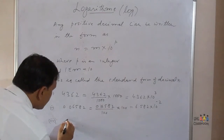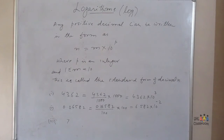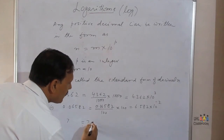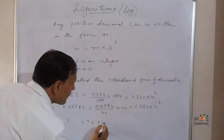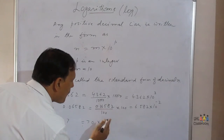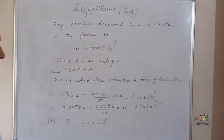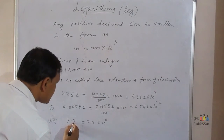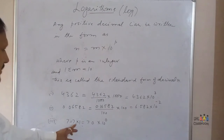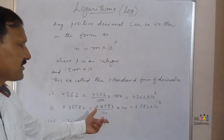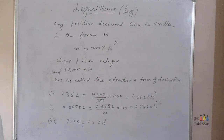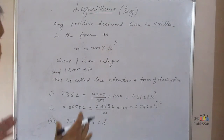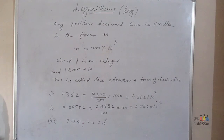If the number is simply 7, we can write it as 7.0 × 10^0, since anything raised to 0 is 1. Therefore 7 = 7.0 × 10^0. In this way, we convert any number to its standard form.